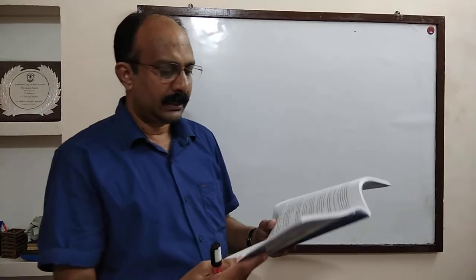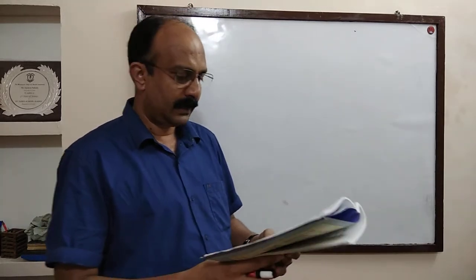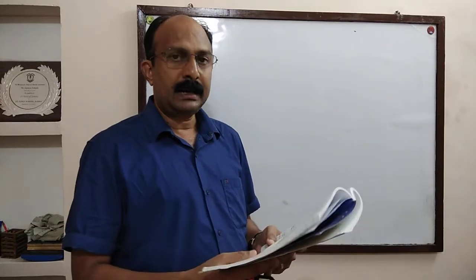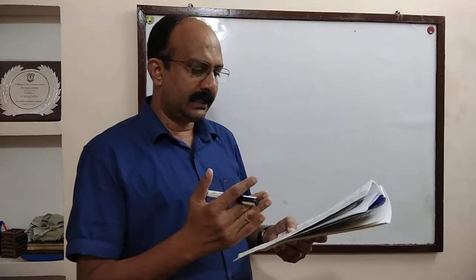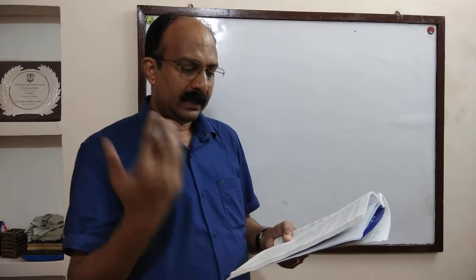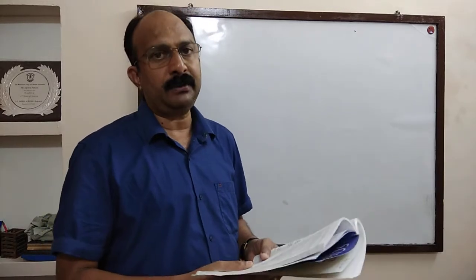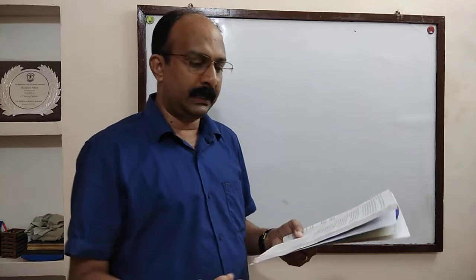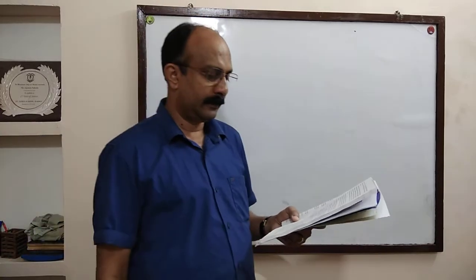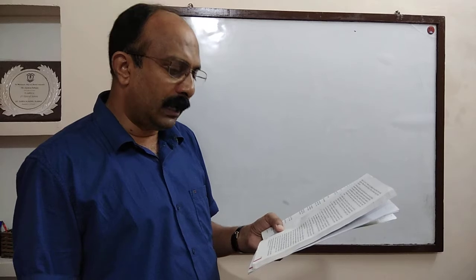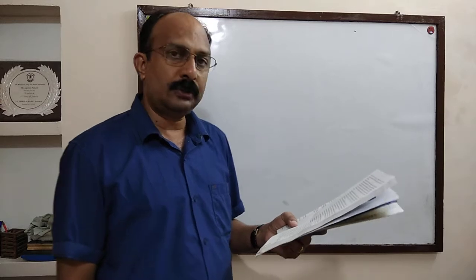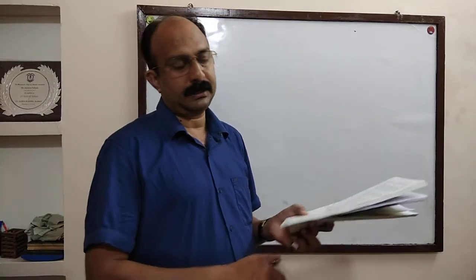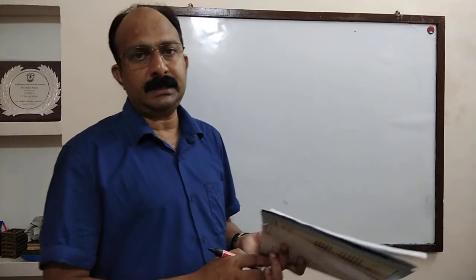The next question is Question Number 15. An object of mass 1 kg traveling in a straight line with a velocity of 10 meters per second collides with and sticks to a stationary wooden block of mass 5 kg. Then they both move together in the same straight line. There are three parts in this question.